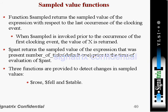The function $past returns the sampled value of the expression that was present a number of ticks — at least 1 — prior to the time of the evaluation of $past.